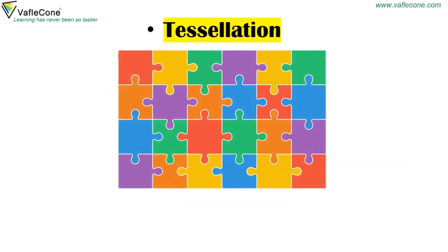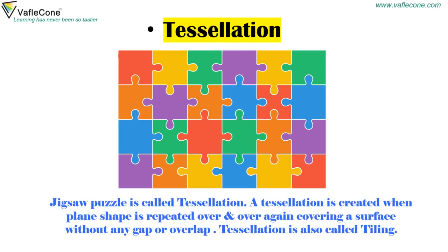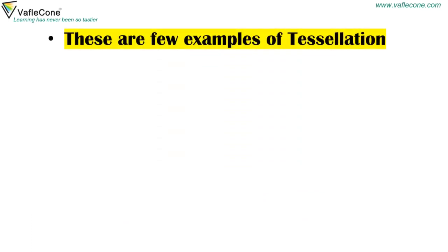Tessellation. A jigsaw puzzle is called a tessellation. A tessellation is created when a plane shape is repeated over and over again, covering a surface without any gap or overlap. Tessellation is also called tiling. These are a few examples of tessellation.